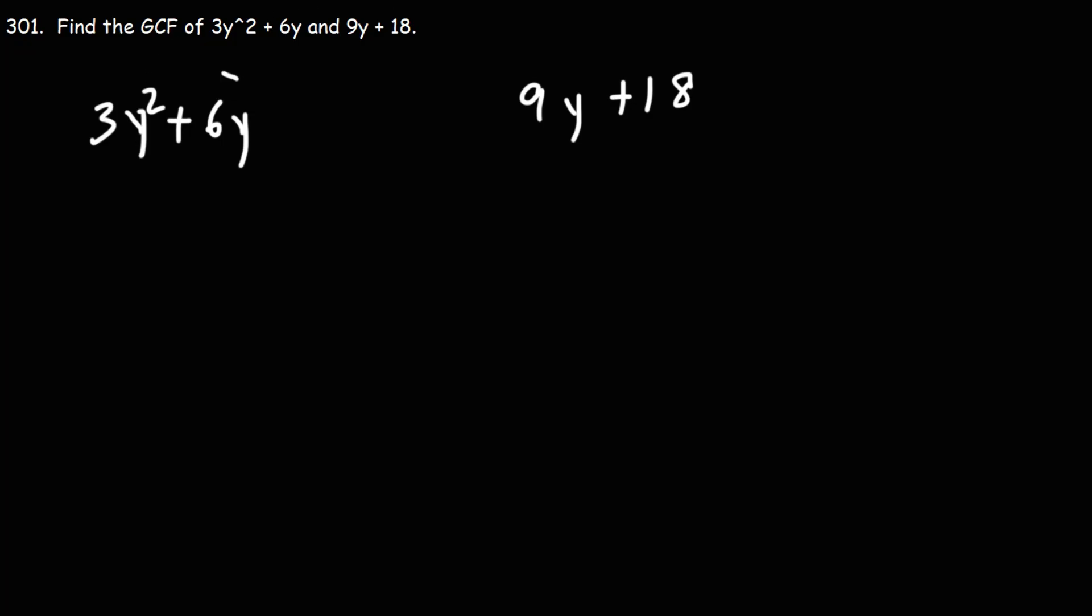Just looking at this part, 3y squared plus 6y, the GCF there is 3y. If we take out 3y, 3y squared divided by 3y is y, 6y divided by 3y is 2.